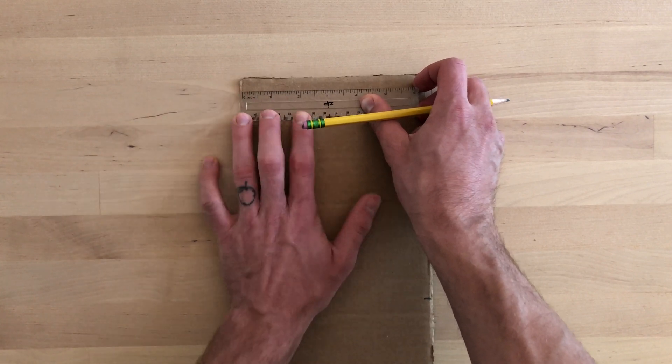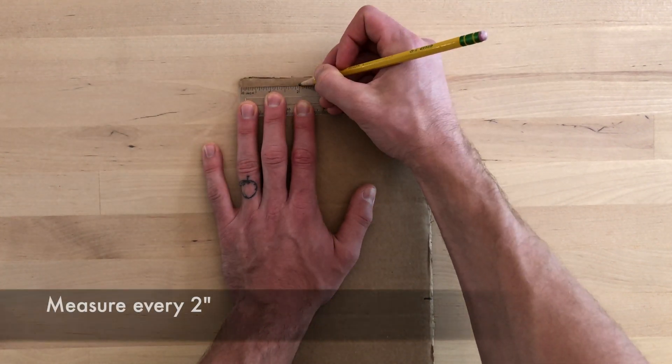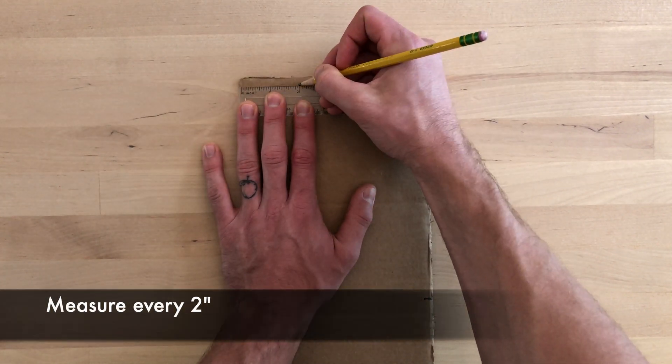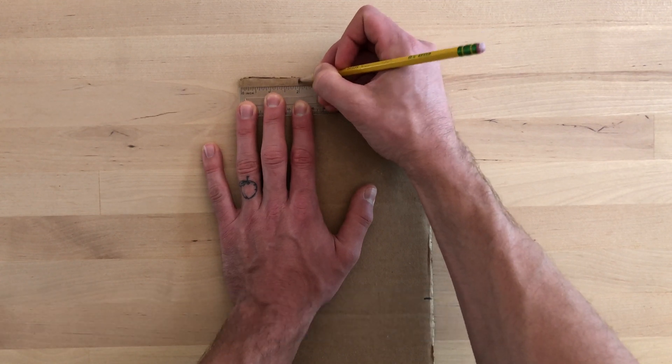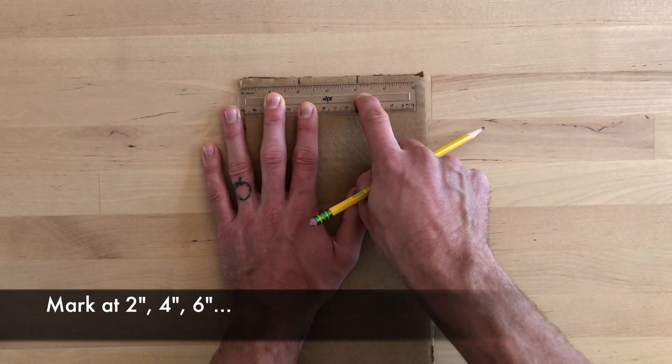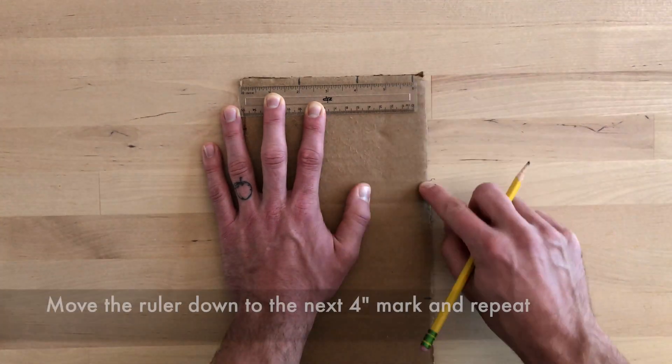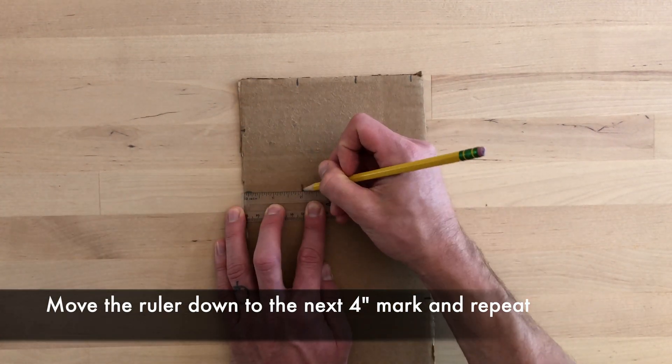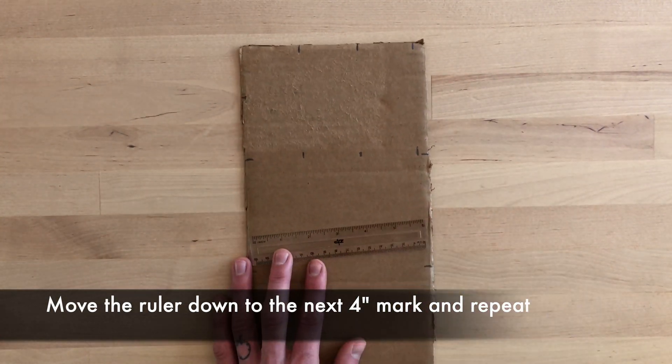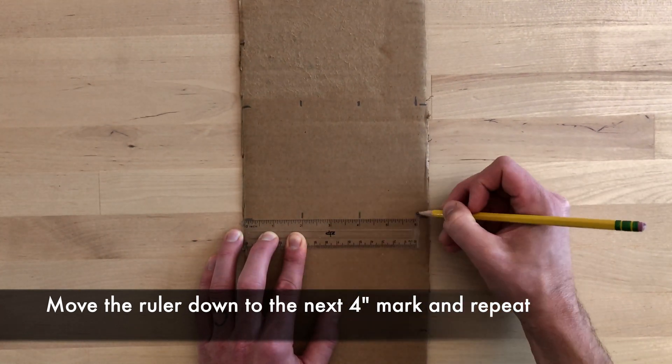Now I'm going to measure the width of my constructor. That's going to be two inches, and so I'm going to keep my ruler in place and measure every two inch mark. Two, four, six, and so on. Move the ruler down to the next four inch mark and repeat until you run out of cardboard.